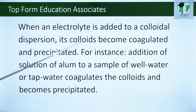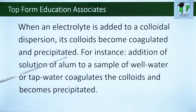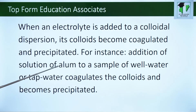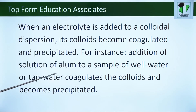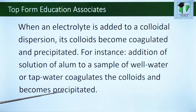When an electrolyte is added to a colloidal dispersion, its colloids become coagulated and precipitated. For instance, addition of a solution of alum to a sample of well water or tap water coagulates the colloids and they become precipitated.